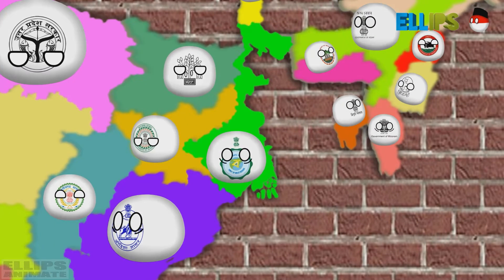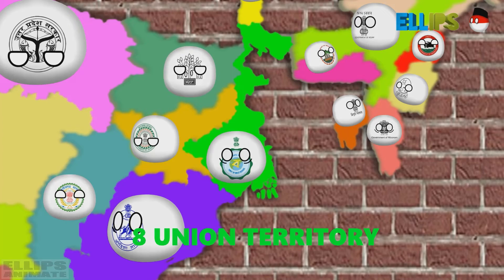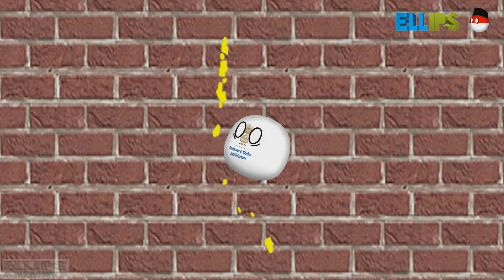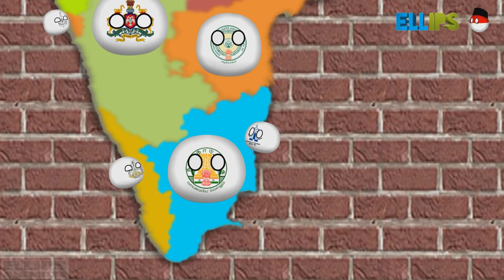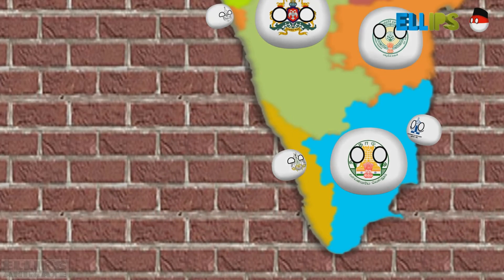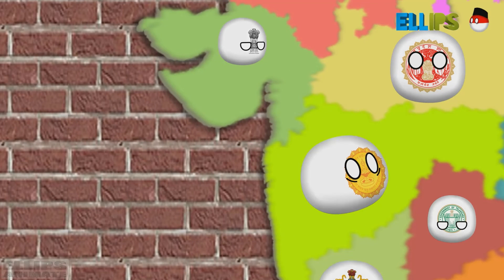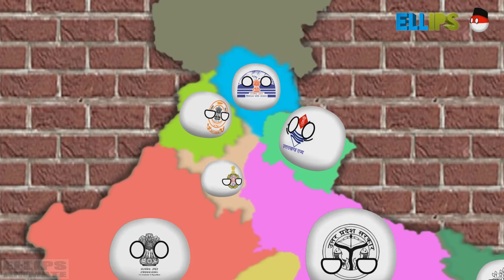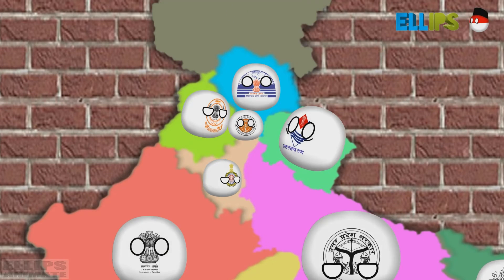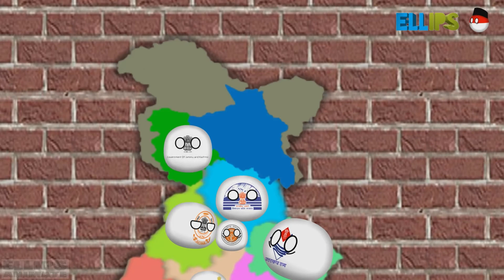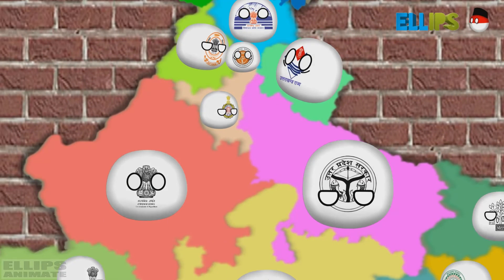Union Territories: Andaman and Nicobar Island, Puducherry, Lakshadweep, Dadra and Nagar Haveli and Daman and Diu, Chandigarh, Jammu and Kashmir, Ladakh, National Capital Territory Delhi.